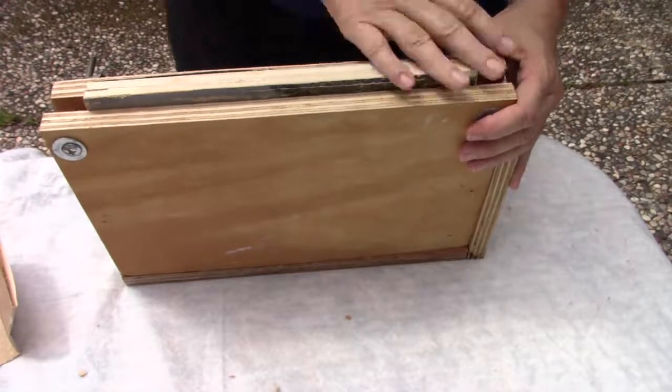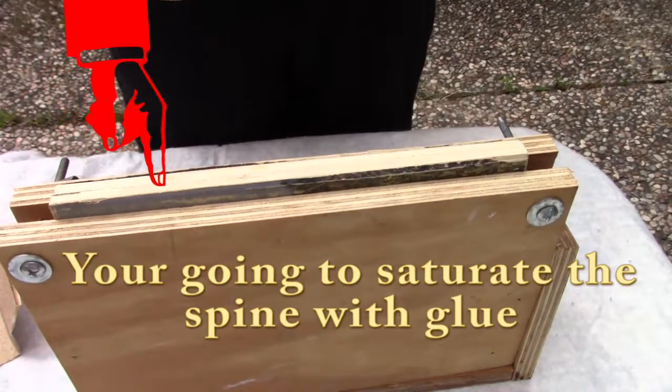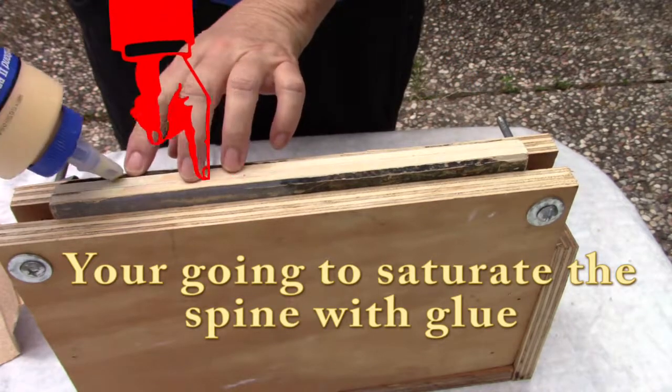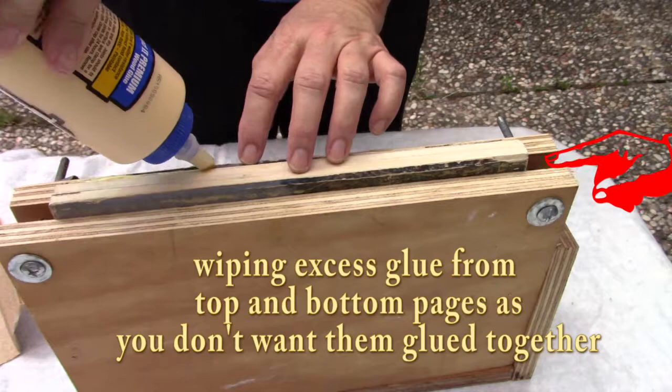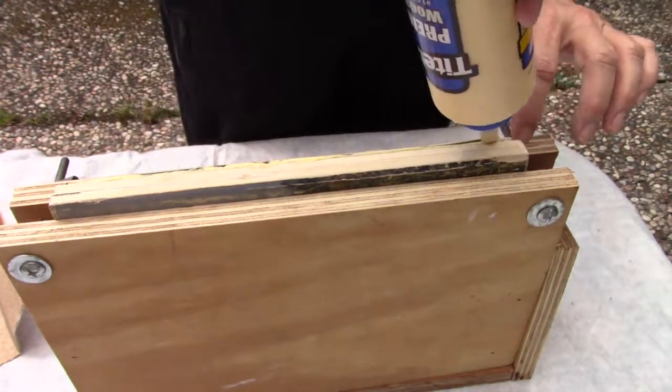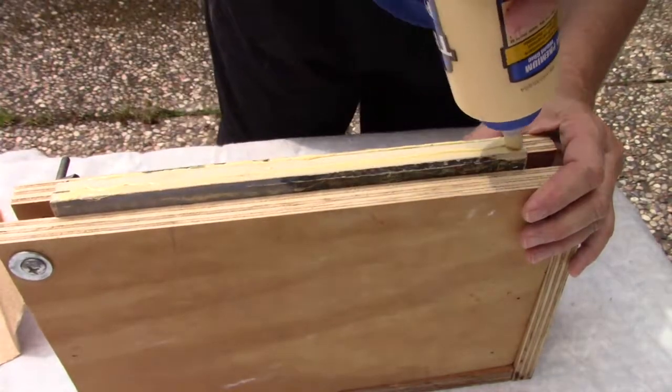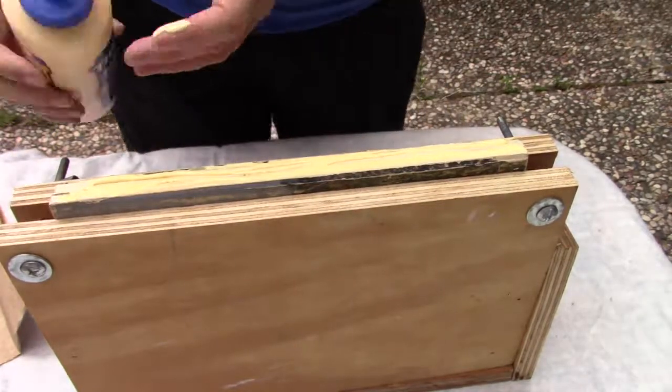I'm cleaning it all off. I'm going to go ahead and saturate the spine with glue. I'm going to run it right up along the top. And I want to make sure I get those covers. I'm going to wipe the excess glue from the top and bottom pages. You don't want those sticking together. So I'm going to saturate the spine with glue. Make sure I get quite a bit because I'm going to rub it into the spine here.